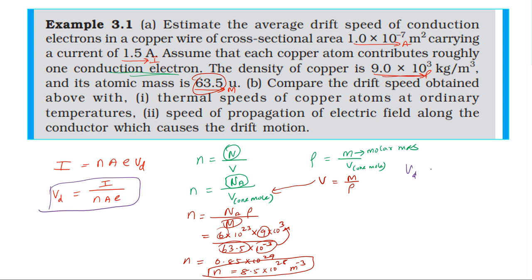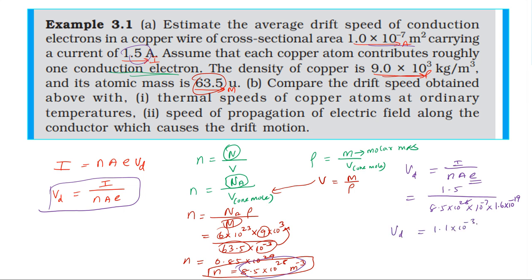Drift speed is equal to current divided by free electron density × area × charge of electron. Current is 1.5 A, free electron density is 8.5 × 10²⁸, area is 10⁻⁷, charge of electron is 1.6 × 10⁻¹⁹. This gives 1.1 × 10⁻³ meter per second, that is 1.1 millimeter per second. So the order of drift velocity is 10⁻³ meter per second.